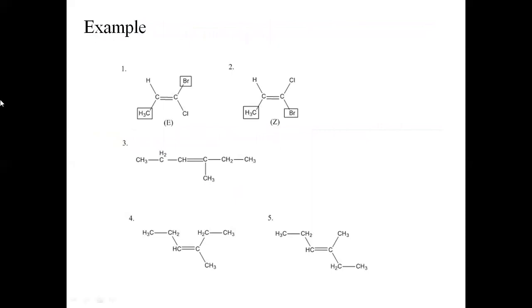Now consider some examples. For a carbon double bond carbon where one carbon has a methyl group and hydrogen — the methyl group has highest priority — and the other carbon has bromine and chlorine — bromine has the highest priority. Since both carbons' highest priority groups are on opposite sides, this isomer is called an E isomer. If the highest priority groups were on the same side, it would be called a Z isomer. Remember: Z means cis and E means trans.